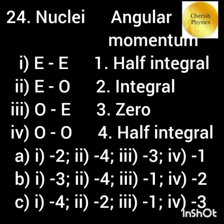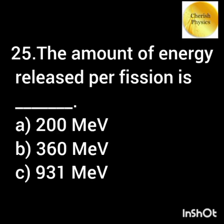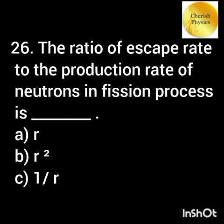Match the nuclei with their corresponding angular momentum, where E implies even and O implies odd. The amount of energy released per nuclear fission is approximately 200 MeV. The ratio of escape rate to the production rate of neutrons in fission processes is called the multiplication factor.